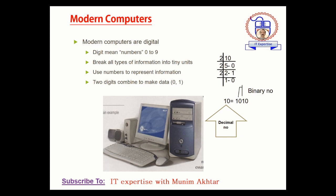Now let's have a look at modern computers. Before going to discuss the history of computers, modern computers normally work on digits — digits meaning zero to nine combinations. The computer breaks all types of information into tiny units. In the coming lecture I will discuss with you the number system.